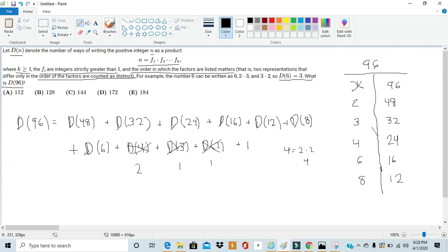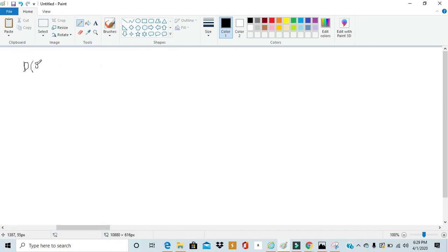Now, d(6), it's given to us in the problem. d(6) is 3. The next value we need to find is d(8). So we broke up d(96) as a sum of its factors. So let's do the same thing with d(8). d(8) would be equal to the sum of the d's of all of its factors, and then we just tag on an additional one. So d(8) would be equal to d(4) plus d(2) plus 1. We got d(4) to be equal to 2 and d(2) to be equal to 1. And then once we add that additional one, we get d(8) to be equal to 4.